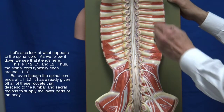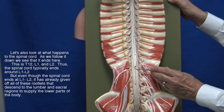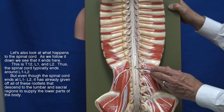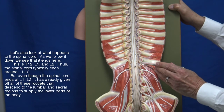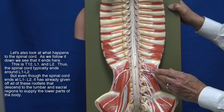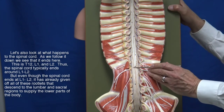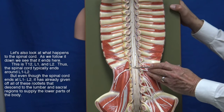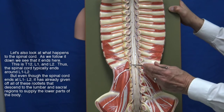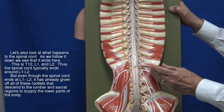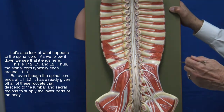Let's also look at what happens to the spinal cord. As we follow it down, we see that it ends here around T12, L1, and L2. Thus the spinal cord typically ends around L1–L2. But even though the spinal cord ends there, it has already given off all of these rootlets that descend to the lumbar and sacral regions to supply the lower parts of the body.